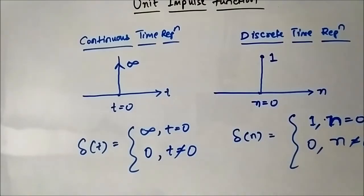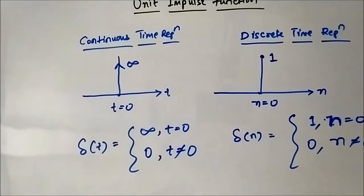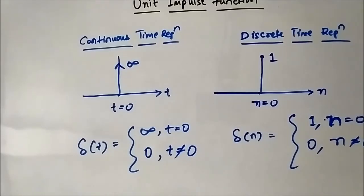So these are the basic things related to the impulse function, which is a very important signal for the analysis of signals and systems. We have many more elementary signals to cover. I hope you like this video. Please subscribe to my channel Engineering Tutorial for more videos related to electrical, electronics, instrumentation, and communication engineering. Have a great day. Thank you very much.